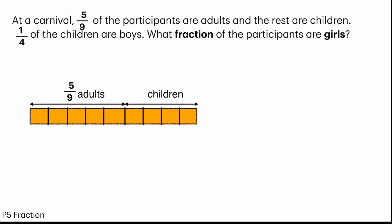And so what do we observe about children? What is the fraction for children here? It's 4 out of 9. So out of this 4 out of 9, 1 quarter of the children are boys. Now if we observe, there are already 4 parts for children. So we can say that this is boys, and the rest are girls.